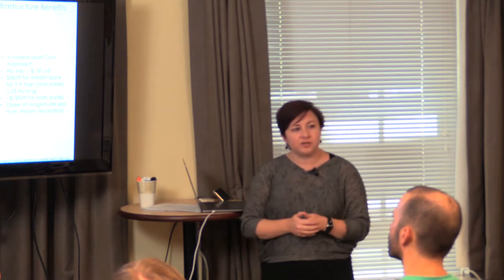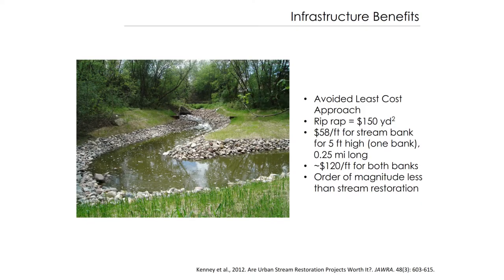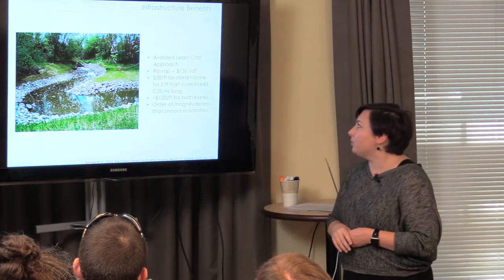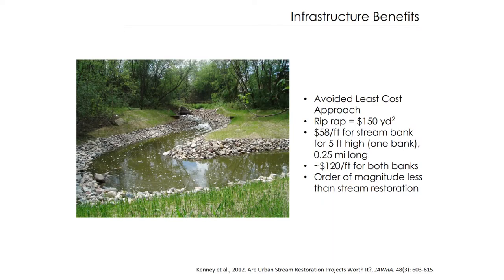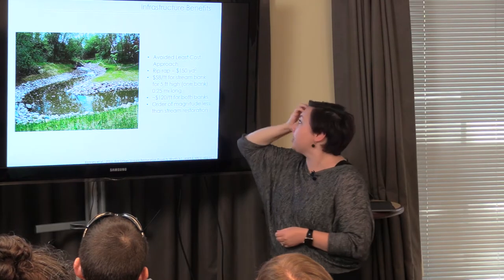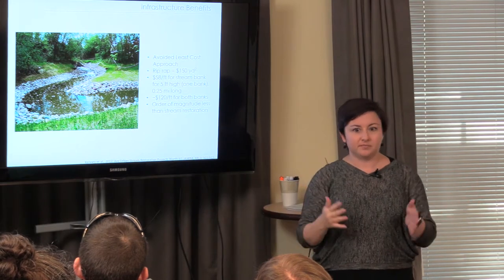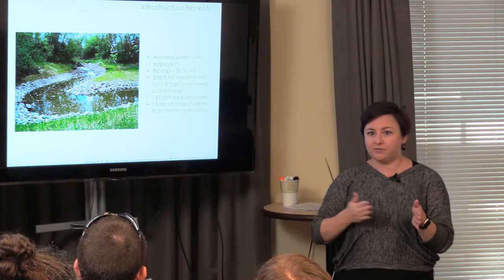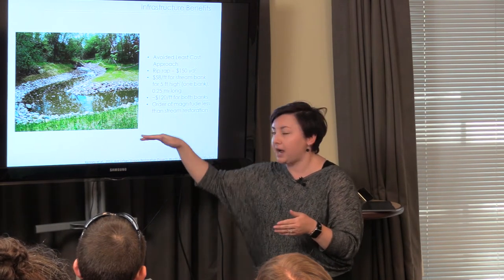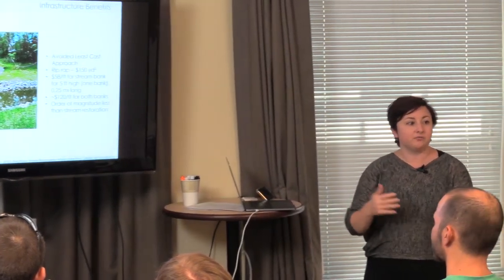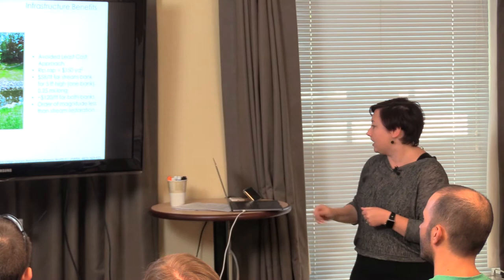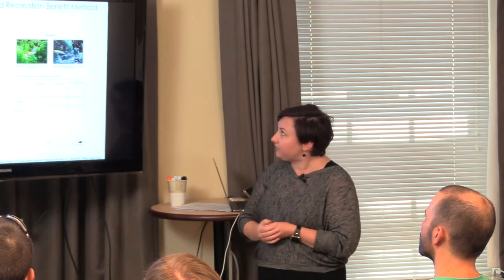Infrastructure: a lot of stream restoration projects have pipelines or other infrastructure running along the stream, since gravity supports water movement. A number of stream restoration projects have co-benefits related to protection of bridges or pipelines. Using the least-cost alternative approach — only thinking about what is the cheapest way to achieve this benefit — we said: rip-rap the sides of the stream, which stabilizes stream banks, prevents impacts to roads, bridges, and pipelines, and you can calculate the cost of rip-wrapping that stream.